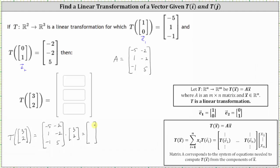To find the first entry, we multiply row 1 of matrix A by the column vector: negative 5 times 3 plus negative 2 times 2 is negative 15 plus negative 4, which is negative 19. To find the second entry, we multiply row 2 by the column: 1 times 3 plus negative 2 times 2 is 3 plus negative 4, which is negative 1. To find the third entry, we multiply row 3 by the column: negative 1 times 3 plus 5 times 2 is negative 3 plus 10, which is positive 7.